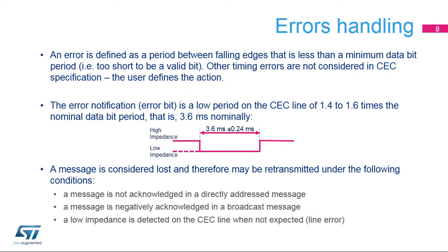A received data bit, excluding the start bit, is considered invalid if the period between the rising and falling edge exceeds the tolerance margins as defined by the HDMI CEC specification. In this case, a bit timing error (BTE) is issued. Or if the period between falling edges exceeds the tolerance margins, a bit period error (BPE) is issued. If a BTE or BPE error is detected, the CEC peripheral notifies the other followers and primarily the initiator by generating an error bit — a low period on the CEC line of 1.4 to 1.6 times the nominal data bit period, that is 3.6 milliseconds nominally.